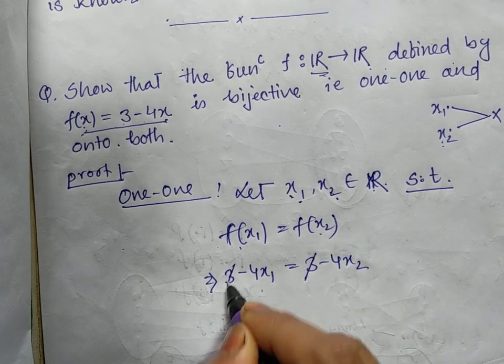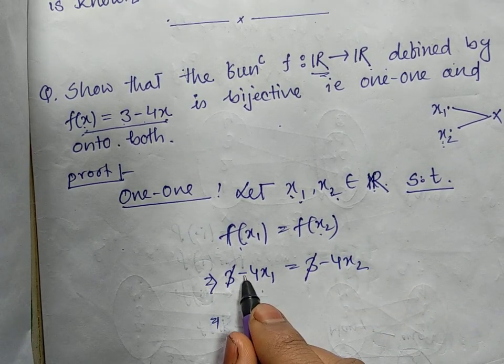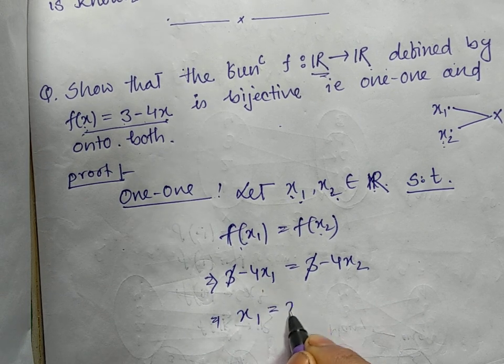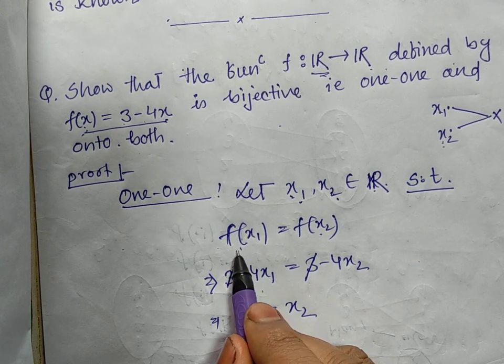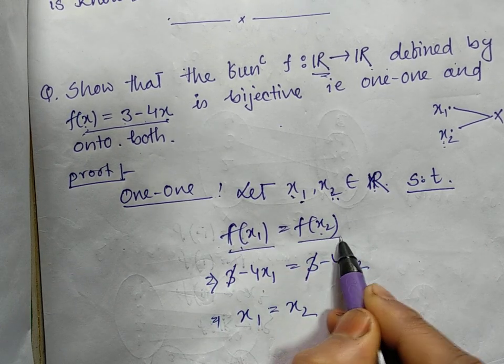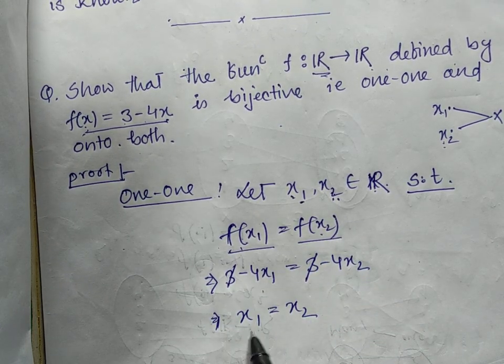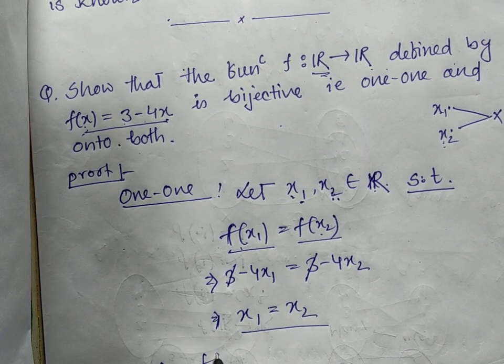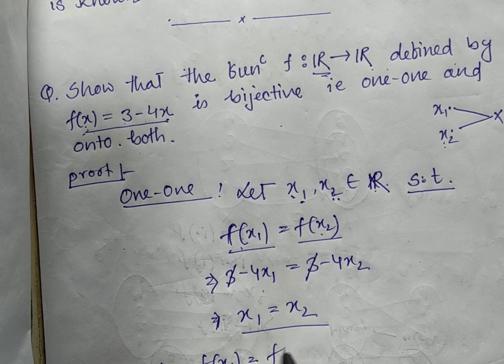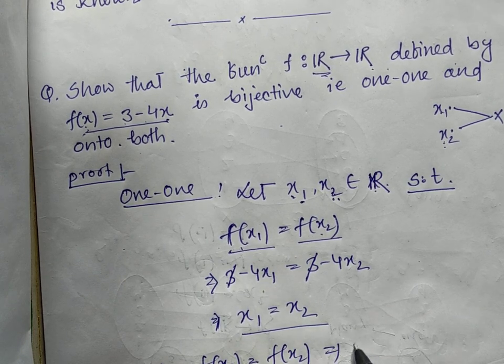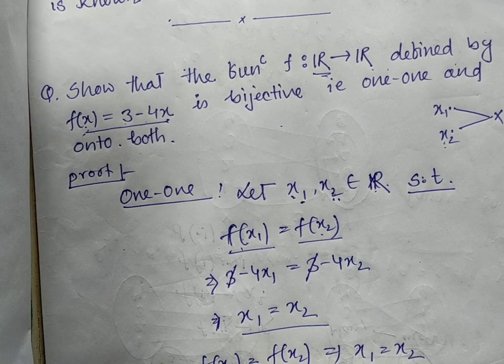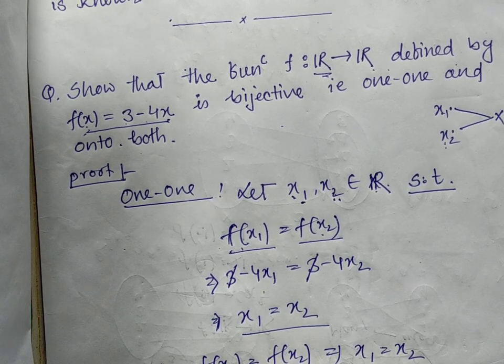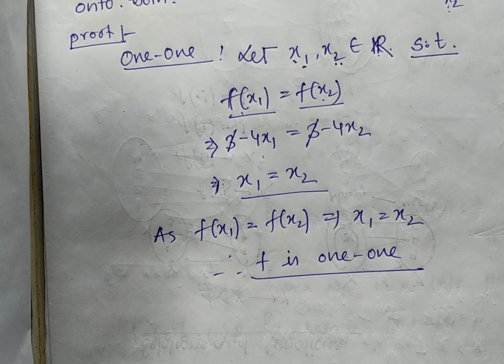So 3 - 4x₁ = 3 - 4x₂. We considered two elements with equal images. Now with proper reasoning we have: -4x₁ = -4x₂, therefore x₁ = x₂. Therefore f is one-one or you can say injective. One-one is proved.